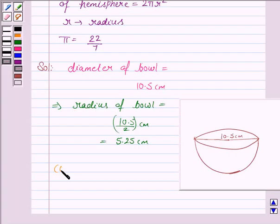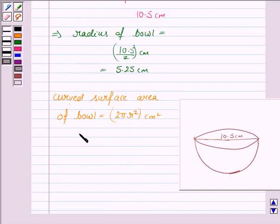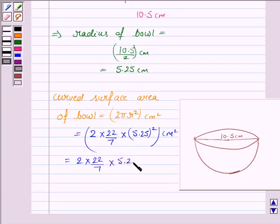Now we find the curved surface area of bowl which is in the shape of hemisphere so it is 2 pi r square cm square since the unit of radius is cm. Now substitute the values of pi and r in this. So it is 2 into 22 upon 7 into 5.25 square cm square. Which is equal to 2 into 22 upon 7 into 5.25 into 5.25 cm square.